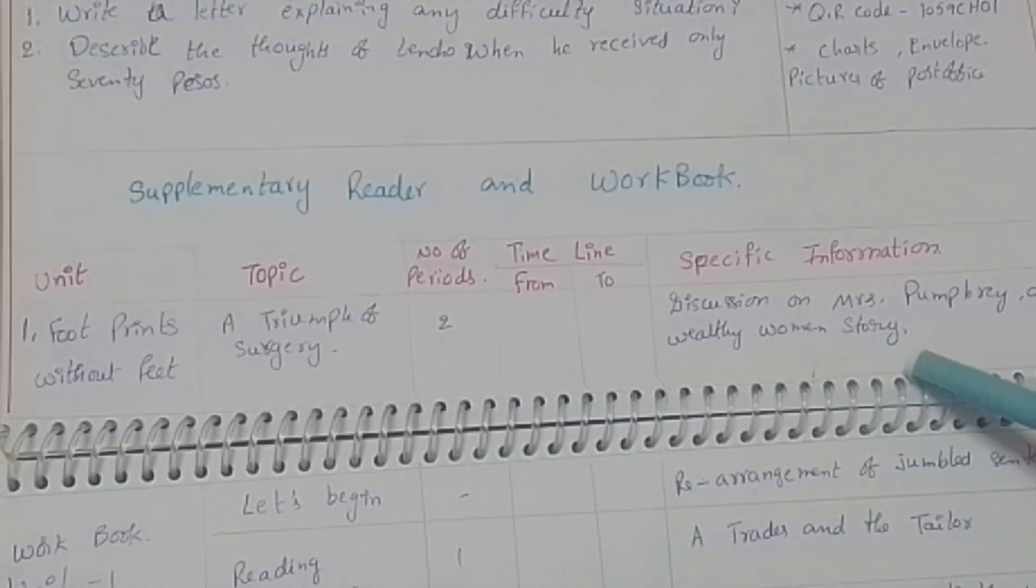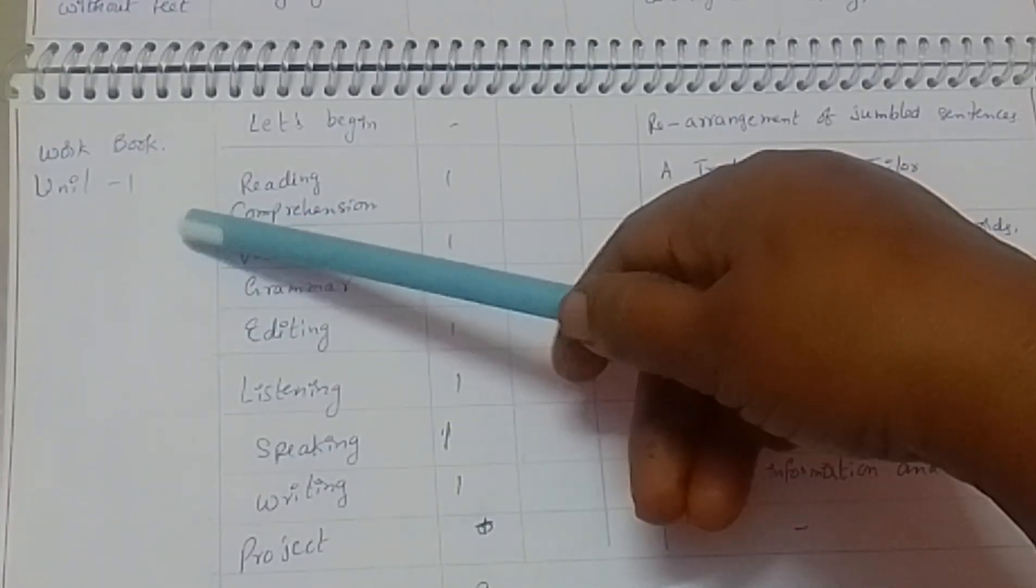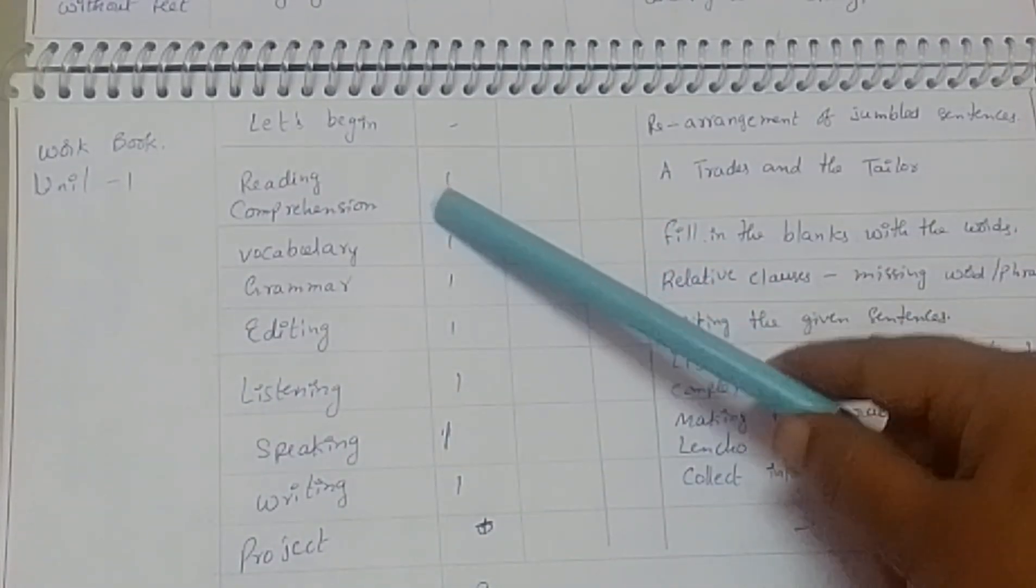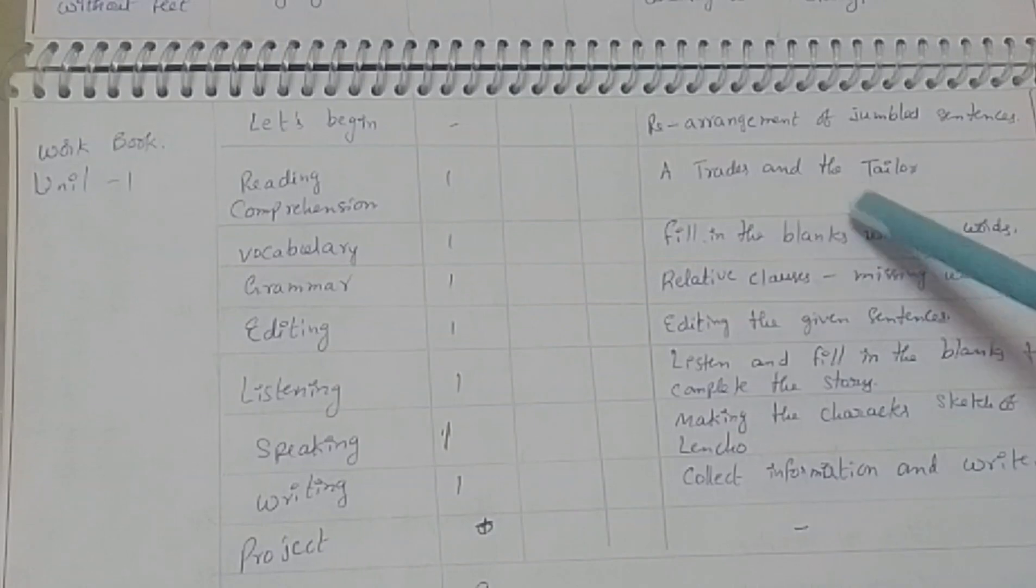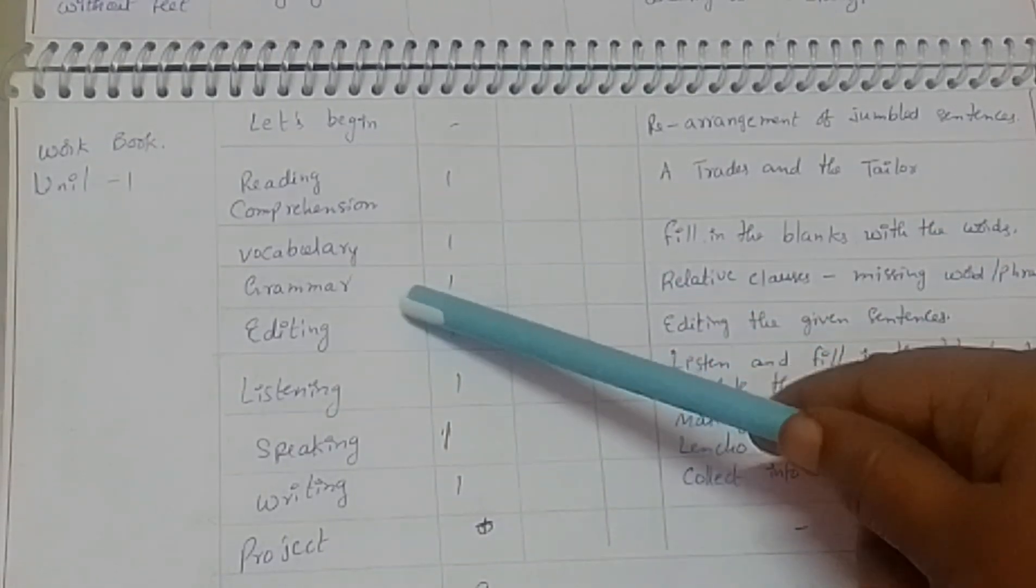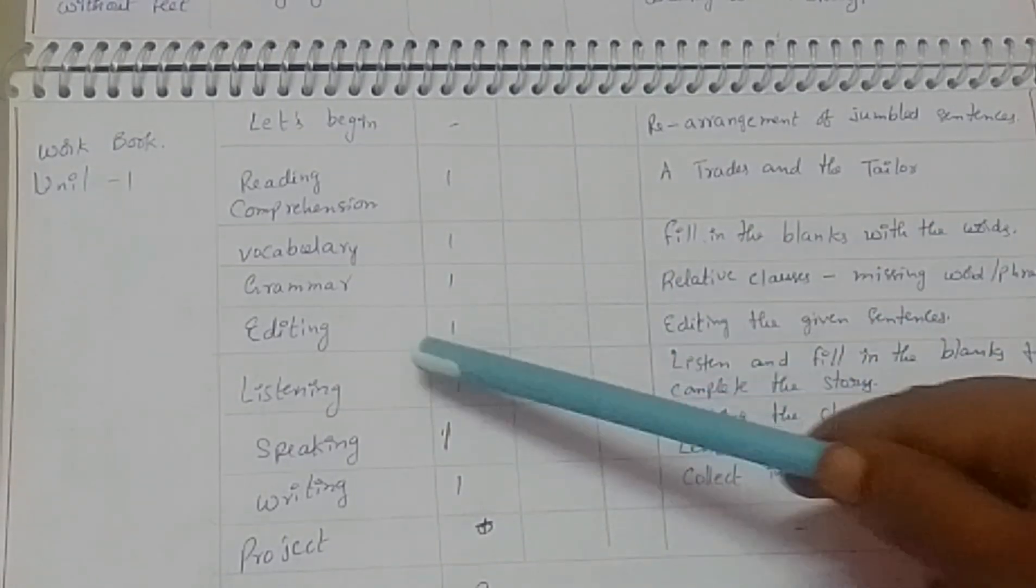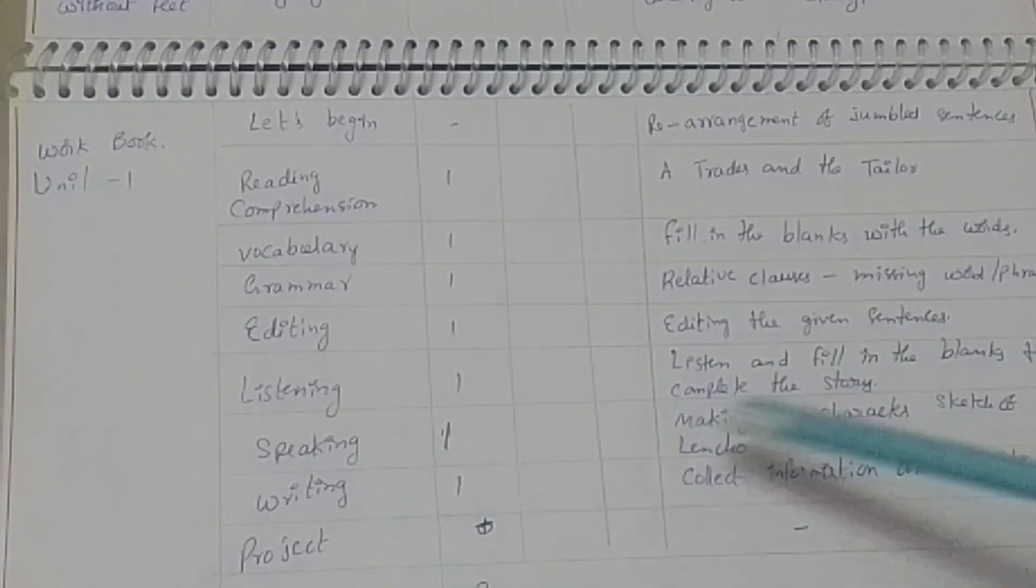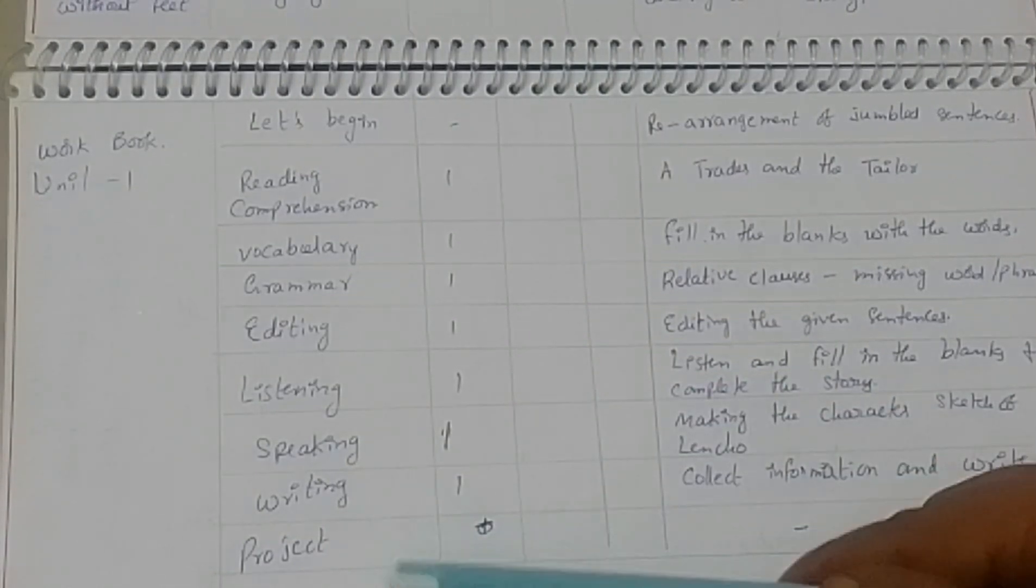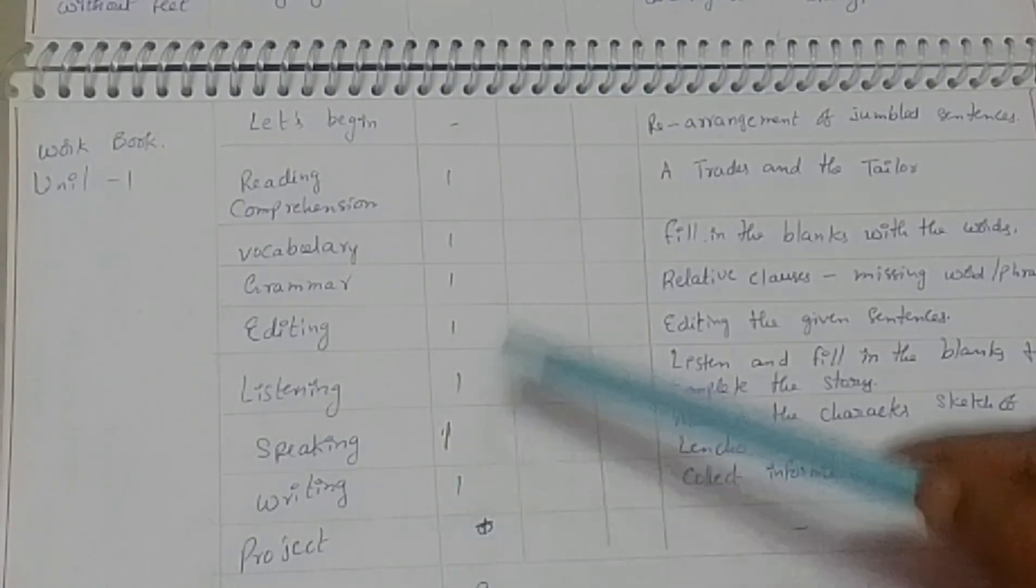Workbook Unit 1: Let's begin, rearrangement of jumbled sentences, reading comprehension - A Trader and the Trailer, vocabulary - fill in the blanks with the words, grammar - relative clauses and missing word or phrase, editing - editing the given sentences, listening - listen and fill in the blanks to complete the story, speaking - making the character sketch of Lencho, writing - collect information and write, and the project work we explain. In detail we need nine periods for supplementary and workbook exercises.